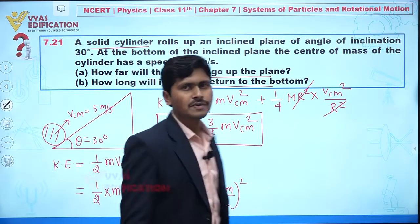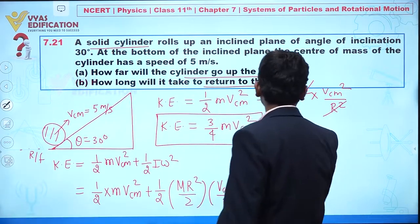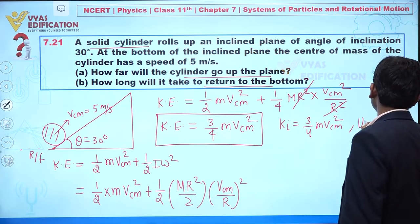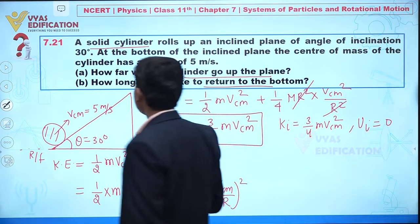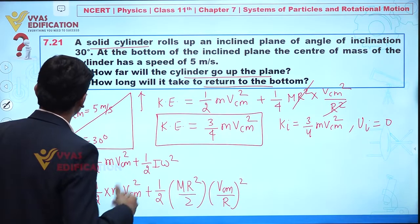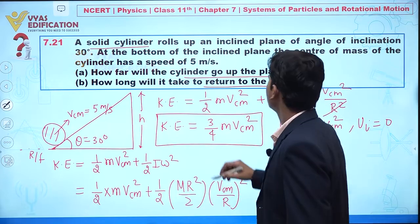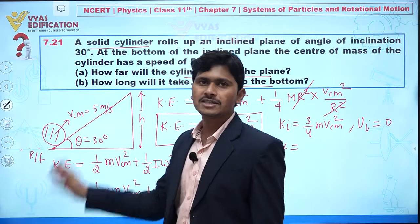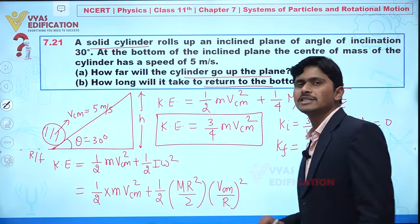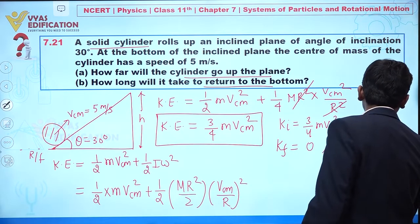Now let us understand the concept clearly. Taking the initial position as the reference, at the initial position we have kinetic energy = ¾mv_cm² and potential energy = zero. When the cylinder moves upward, one component of gravitational acceleration acts in the opposite direction, so the final kinetic energy becomes zero, and the final potential energy is mgh.